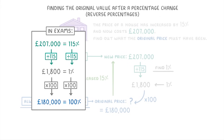So basically, this technique — and in fact every example we're going to look at in this video — is all about finding out the value of 1%. And once you find out what 1% is worth, you can use that to find out the value of any percentage that you want. This way of doing it is basically the simplest way of showing your workings, and this is how I would write this question in the exam.